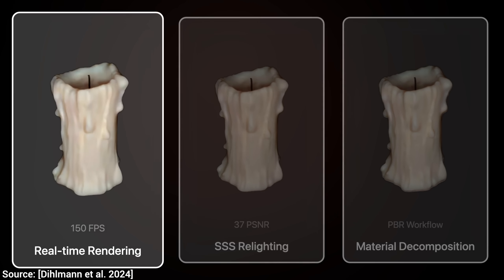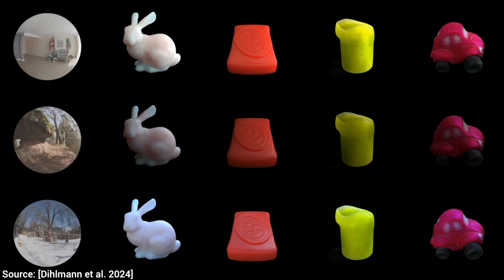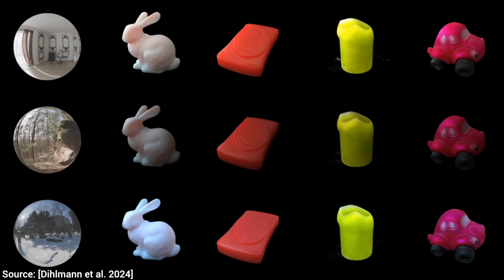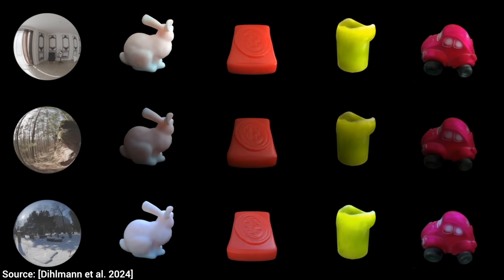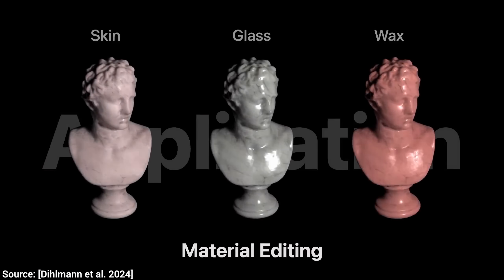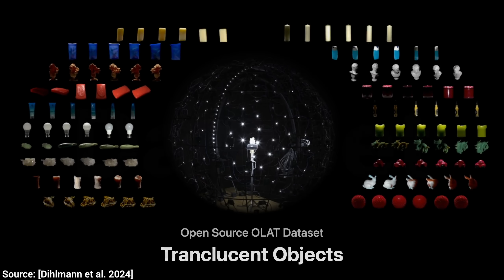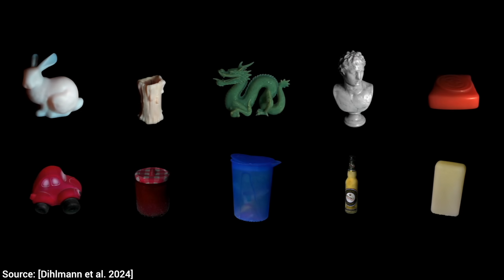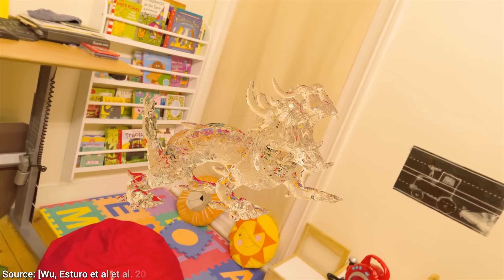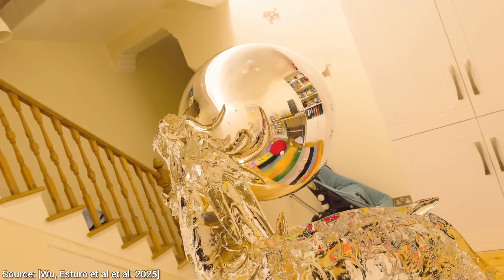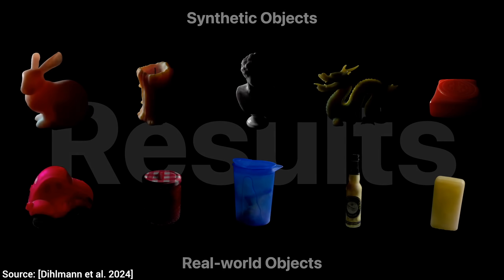But what about subsurface scattering for Gaussian splats? This amazing new work offers exactly that, and it gets even better — it supports relighting too. You provide an object and an image, and it imagines what that object would look like in different environments. You can even edit the materials, going from skin to glass to wax. Gaussian splats are only about 2 years old, yet through open research, human ingenuity, and AI, reflections, refractions, and translucency are already possible.